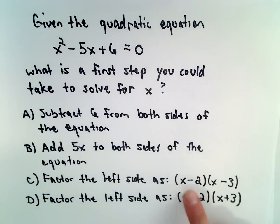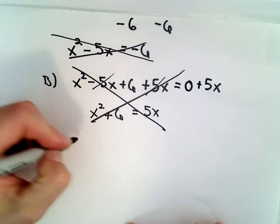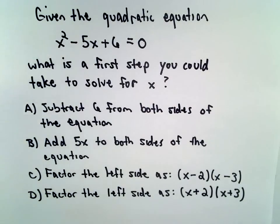Part C says factor the left side as the quantity x minus 2 multiplied by x minus 3. So let's look at that.